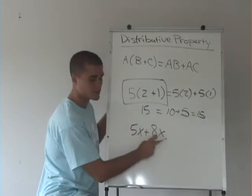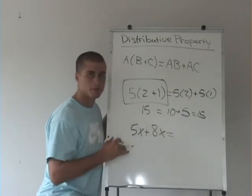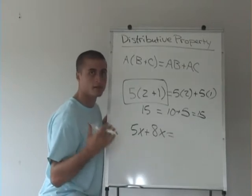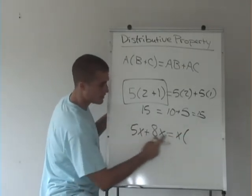Where we have this common term x, we can do the inverse of the distributive property and take the x out of both of the things being added together, and then put the 5 and the 8 in the parentheses.